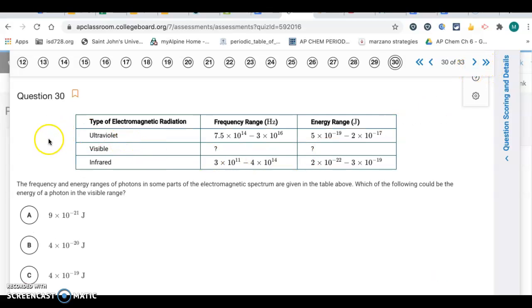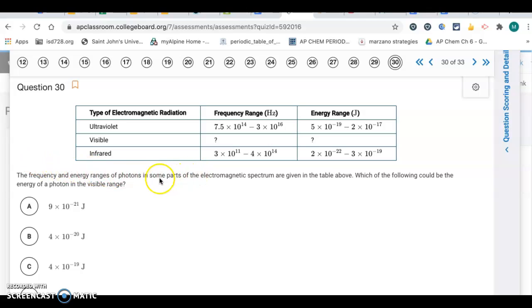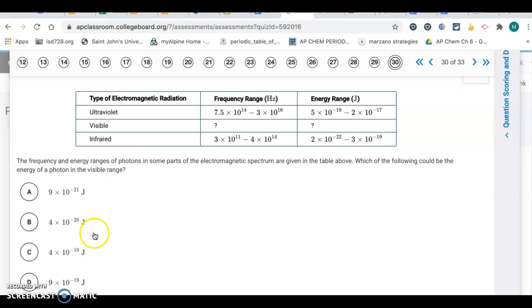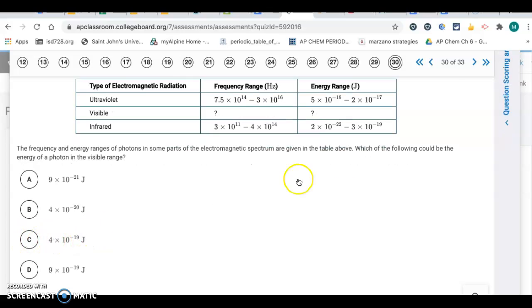Question 30. The frequency and energy ranges of photons in some parts of the electromagnetic spectrum are given in the table above. Which of the following could be the energy of a photon in the visible range? In the spectrum, visible is between UV and infrared. It's going to be in between those two. So 4 times 10 to the negative 19th is in between those two ranges. The only answer in that range is letter C.